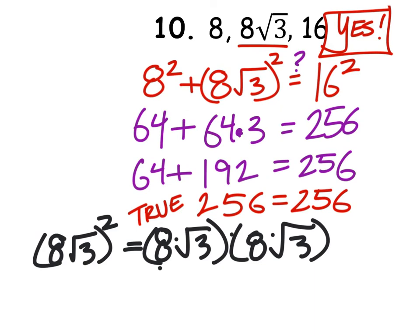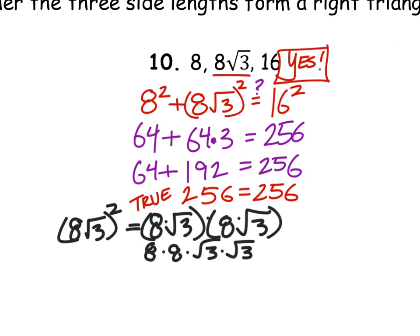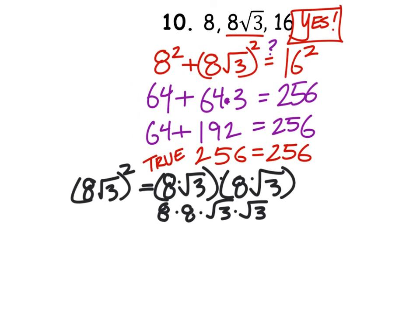We can rearrange these as 8 times 8, times the square root of 3, times the square root of 3, which is the same as 64 times the square root of 3 squared. And the square root and the square root cancel, so we got 64 times 3, which would give us 192.